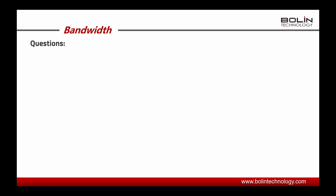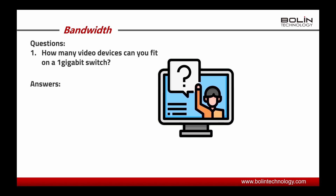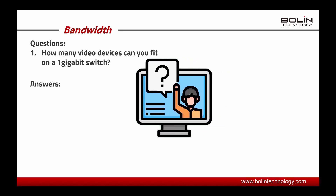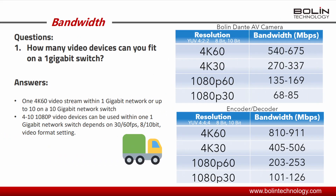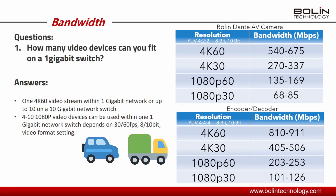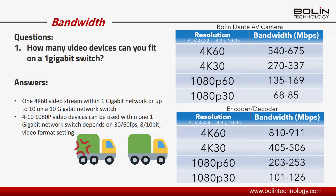With our Dante video devices, we get asked a lot how many cameras can fit on a one gigabit network switch. Using the freeway analogy, we can say that 4K 60 cameras are the semi trucks and 4K 30 cameras are the SUVs, while 1080p is your normal car ranging from a full-size sedan to a two-door coupe. If we try to have two semis — our 4K 60 cameras — on a two-lane freeway, we will create a traffic jam. It's only possible to have one 4K 60 camera on a one gigabit network switch and up to ten 1080p cameras on a one gigabit network switch.